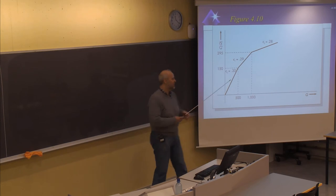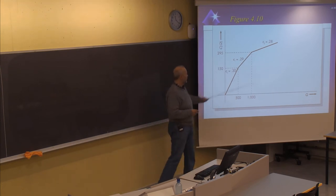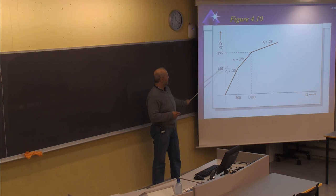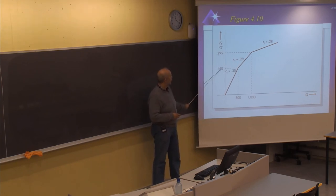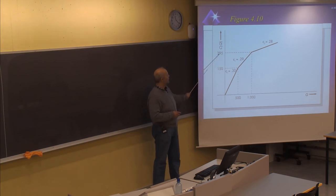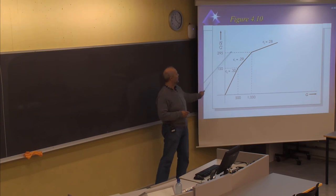We can see that these numbers are fixed. If the order is more than 1000, you have to pay 150 in total for the first 500, and 145 for the next 500, which gives a total of 295 for the first 1000.